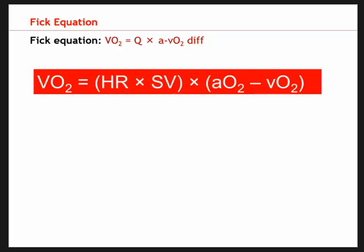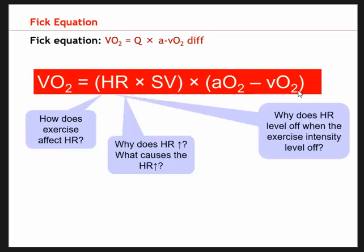Let's continue with the Fick equation and break it down further. Remember that VO2 represents total oxygen delivery to the body. We have Q, which is heart rate times stroke volume, and then the a-vO2 difference — arterial blood oxygen content minus venous blood oxygen content. Normally we'd have a partner discussion in class to answer these questions, so pause this video and try to answer them on your own before I give the answers.